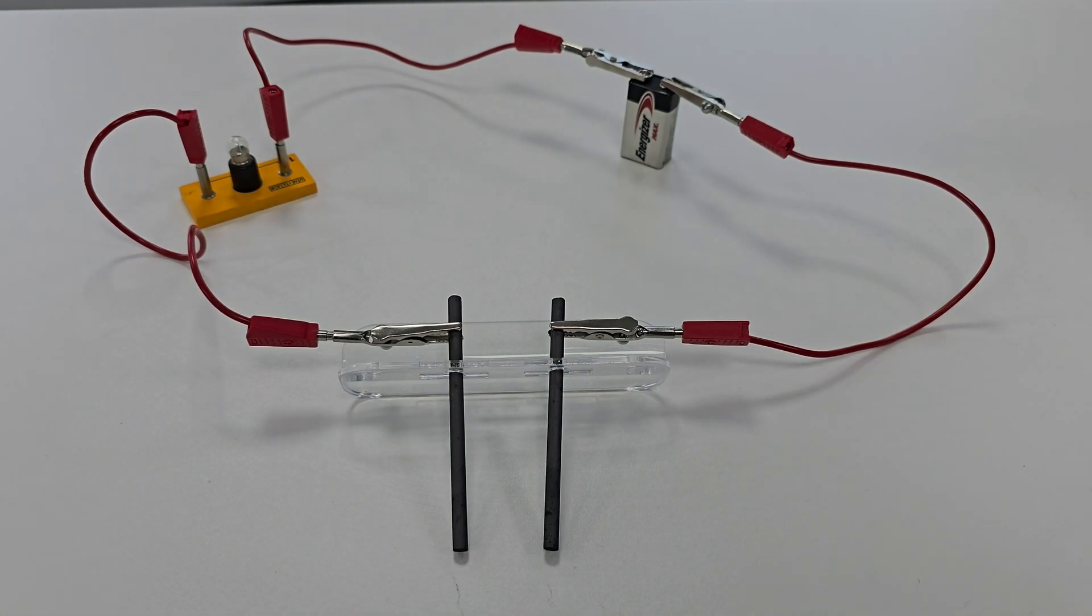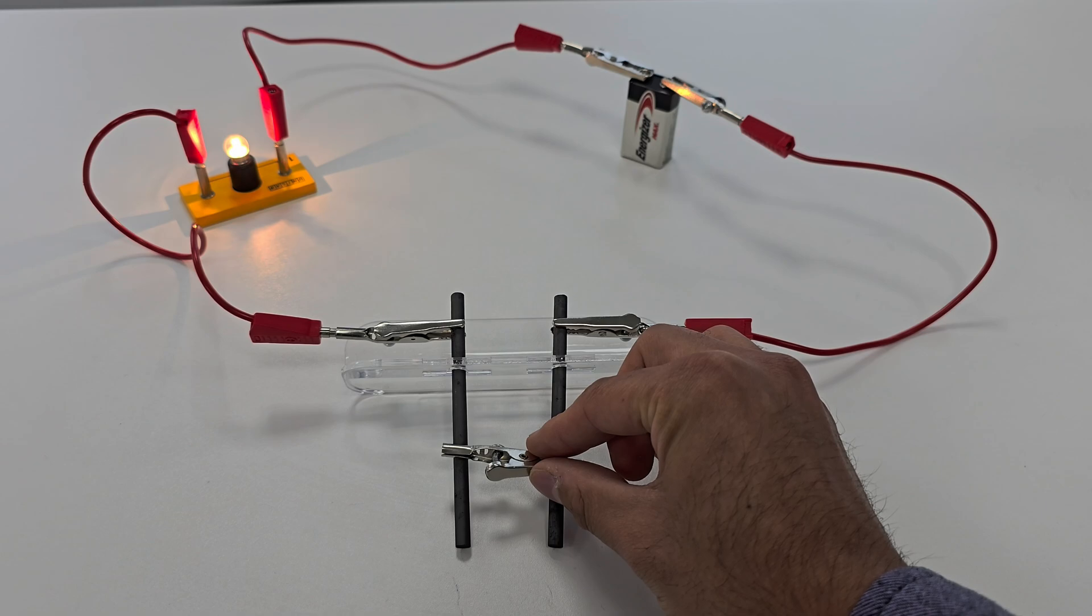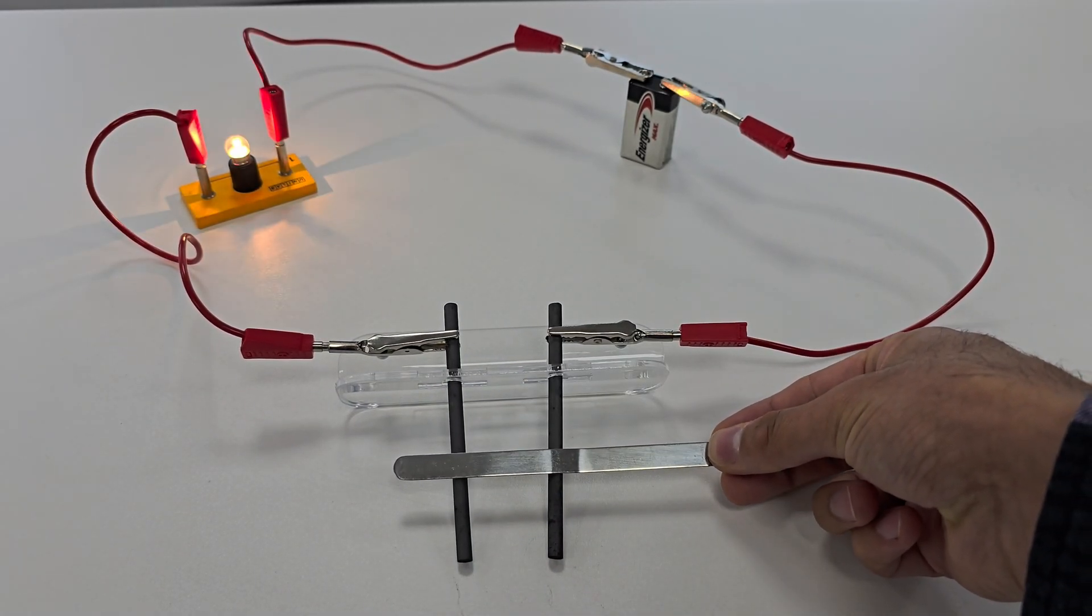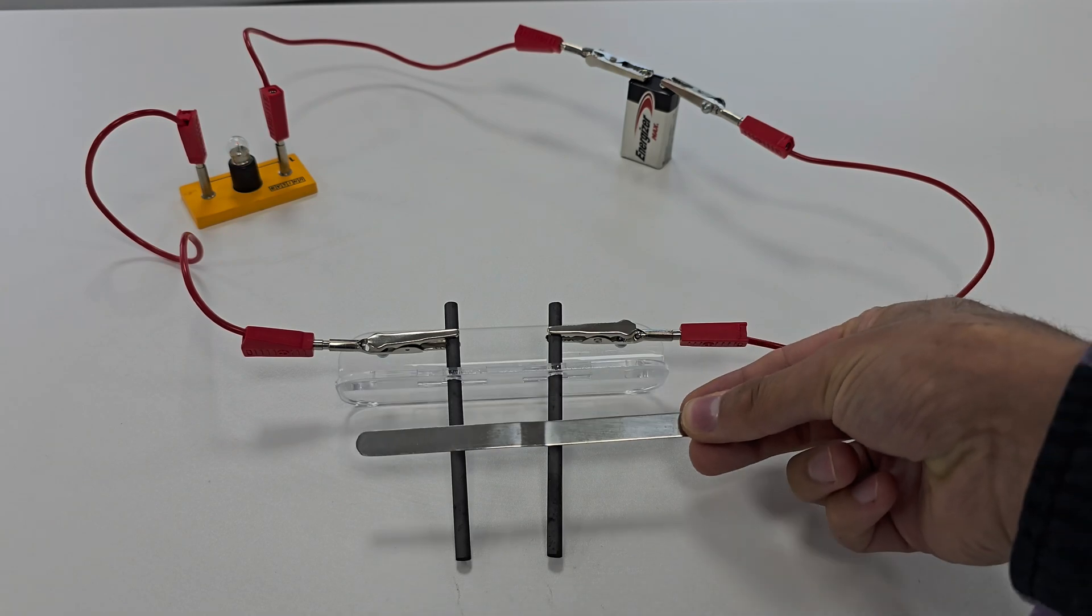Now let's try a crocodile clip, again the bulb lights up. Finally with a metal spatula, as expected the bulb lights up. This confirms our circuit detects conductivity.